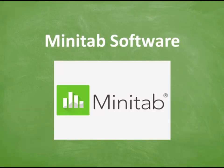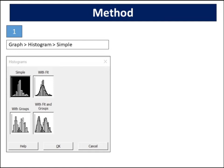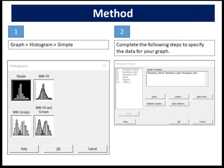We will use Minitab software to analyze the data. Choose graph, histogram, simple. In graph variables, enter resistance March, resistance April, resistance May.